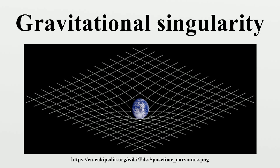The laws of normal space-time could not exist within a singularity. For the purposes of proving the Penrose-Hawking singularity theorems, a space-time with a singularity is defined to be one that contains geodesics that cannot be extended in a smooth manner. The end of such a geodesic is considered to be the singularity. This is a different definition useful for proving theorems.